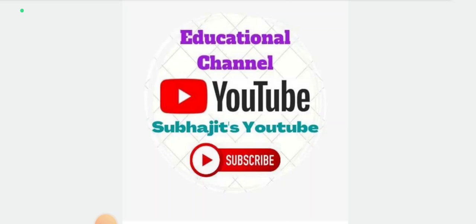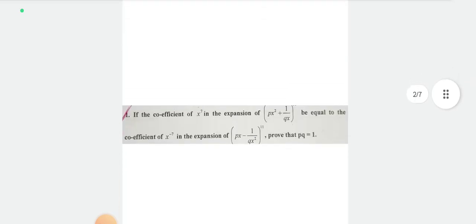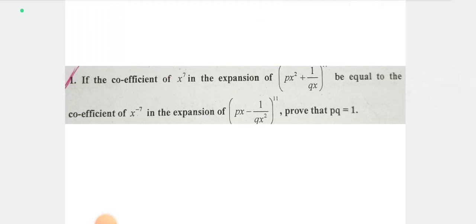For a positive integer value, the general term is T(r+1). The middle term: if the inner value n is even, there is one middle term; if n is odd, there are two middle terms. The formula for the middle term is important to note.